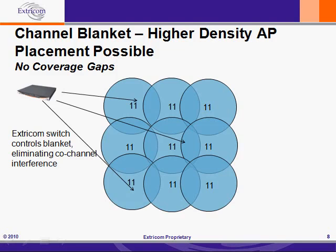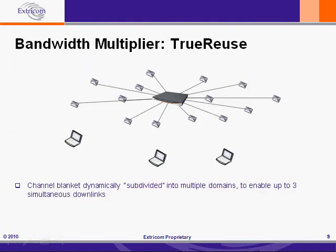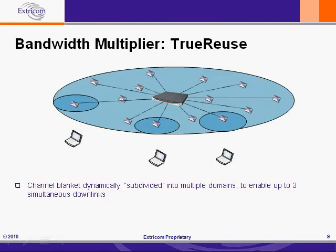For example, the Extracom wireless LAN switch, in stark contrast to microcell controllers, is able to carefully control the channel blanket in order to eliminate co-channel interference between the APs. And it gets even better. Extracom has patented technology called TrueReuse, which enables up to three simultaneous downlinks on a channel blanket. What TrueReuse does is actually triple the downlink capacity of a single channel.